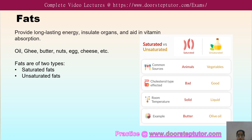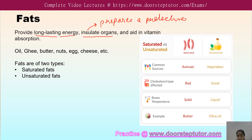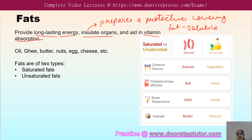Fats are another nutrient required by the body. Fats give us long-lasting energy — more energy than carbohydrates. They help insulate organs by providing a protective covering, and they also help us retain body heat. Fats aid in vitamin absorption, as fat-soluble vitamins are only absorbed if we have an appropriate amount of fat. Common sources include oil, ghee, butter, nuts, eggs, and cheese.